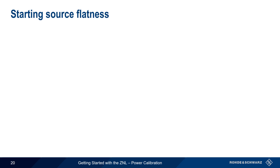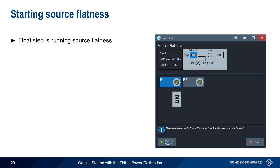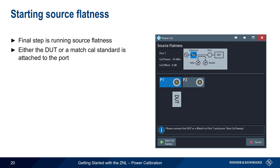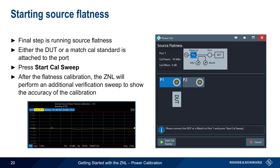The final step in power calibration is running source flatness. This can be done either by connecting the DUT to the port or by attaching a match calibration standard. As before, simply press Start Cal Sweep and follow the prompts. After the flatness calibration is completed, the ZNL will perform an additional verification sweep to show the accuracy of the overall calibration.